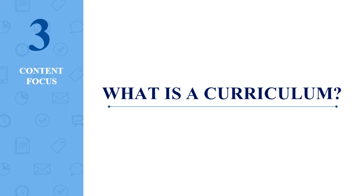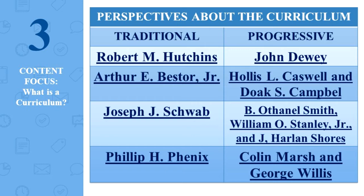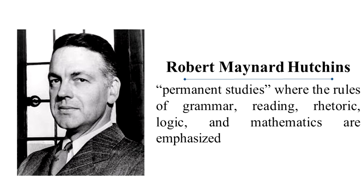After filling out the Venn diagram, it is now time to check whether you have a good schema about the two perspectives. There are a lot of scholars involved in this traditional versus progressive perspective debate, but here are the forerunners and their respective core principles which you have to know. First is Robert M. Hutchins, who views curriculum as permanent studies, where the rules of grammar, reading, rhetoric, logic, and mathematics for basic education are emphasized. He believed that the three R's — reading, writing, and arithmetic — should be emphasized in basic education, while liberal education should be emphasized in college.